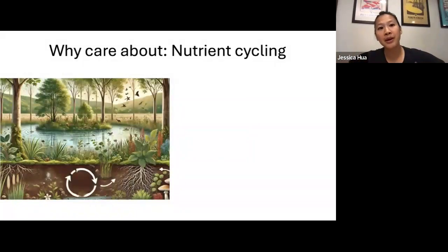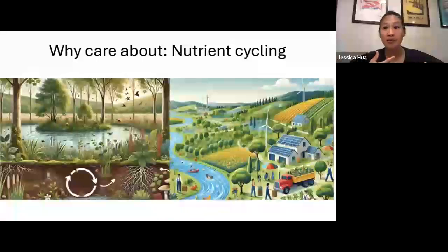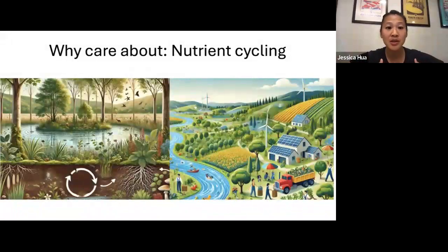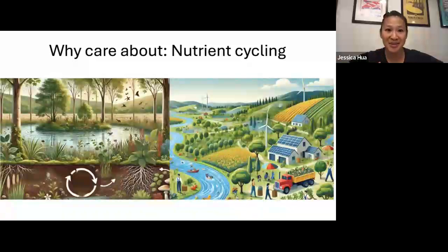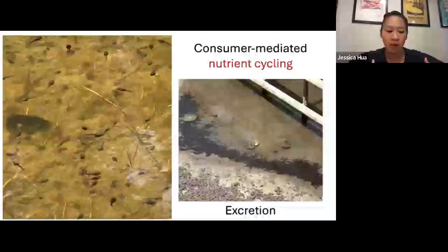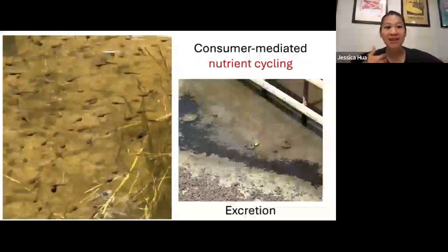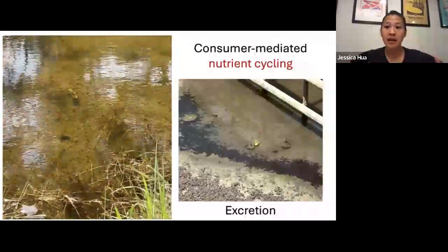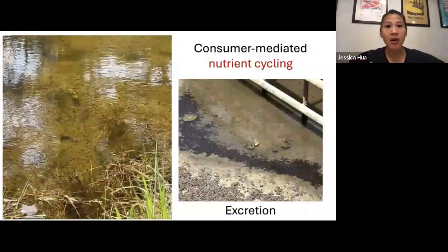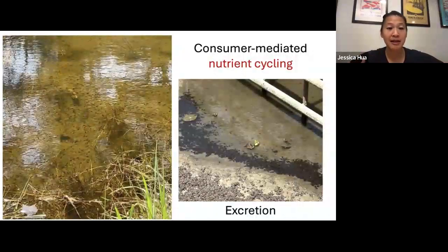Understanding how nutrients flow through a system can help us understand why organisms are found where they are and why they vary in abundance across space and time. From a human society perspective, understanding nutrient cycling can play important roles in regulating things like climate and our food systems. One factor that really drives nutrient movement through a system are animals — consumers — that by eating and excreting move nutrients from one location to the next. In pond systems, tadpoles make up a large density, making consumer-mediated nutrient cycling a major contributor.